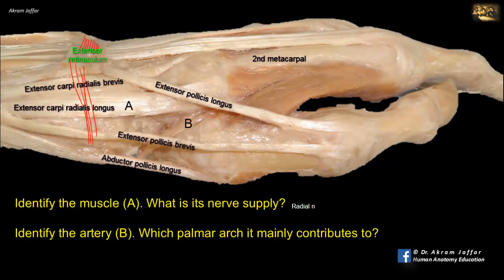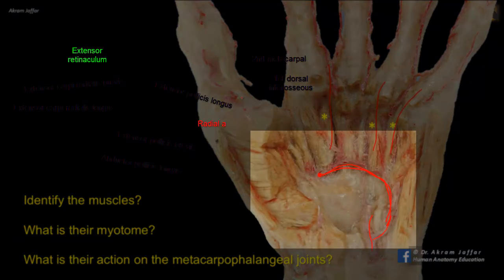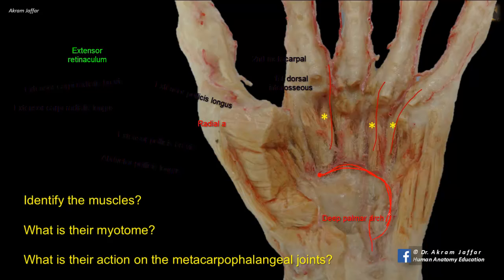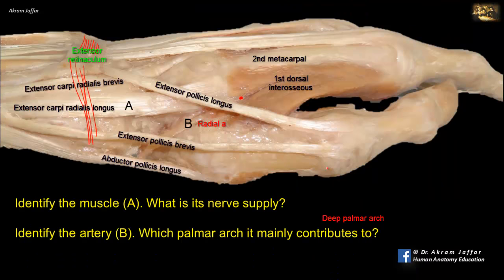The artery that can be seen in the floor of the anatomical snuffbox — whose pulsations can be felt in the living — is the radial artery. The radial artery in the flexor compartment of the forearm curves laterally to reach this position. From here, the radial artery enters the palm by passing between the two heads of the first dorsal interosseous muscle. Remember that the dorsal interossei are bicipital and have two heads. The artery then passes between the two heads of adductor pollicis and appears in the palm, where the long flexor tendons are removed in this dissection. The radial artery forms the deep palmar arch after uniting with the deeper branch of the ulnar artery, and it is the radial artery that is the main contributor of the deep palmar arterial arch.